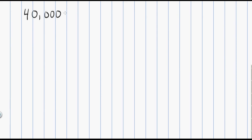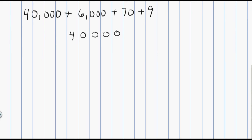The first thing I'm going to do is write the problem: 40,000 plus 6,000 plus 70 plus 9. Now I'm simply going to take this number sentence and write it vertically so that I can add it up just like any addition problem. I always like to start with my largest number on the left, so we'll take 40,000 and make sure I keep one digit per each column.